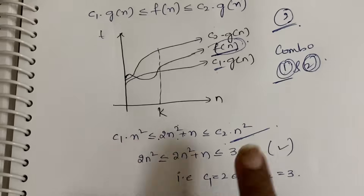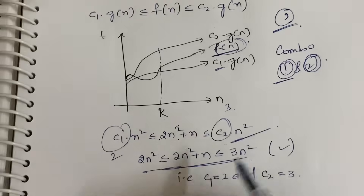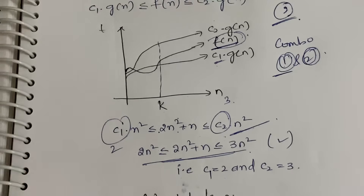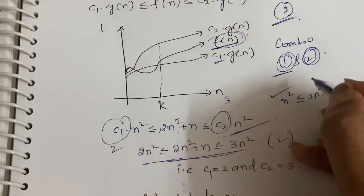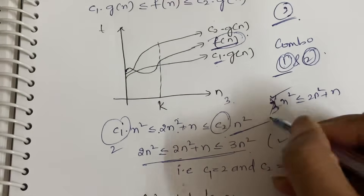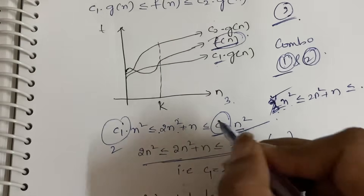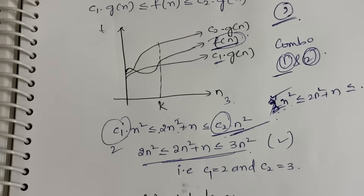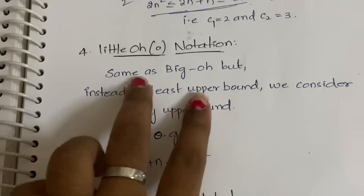Checking values: c1 = 1 satisfies n² ≤ 2n² + n (true), c1 = 2 also satisfies, but c1 = 3 does not. So c1 = 2. For c2, checking 1, 2, 3, 4 — c2 = 3 satisfies 2n² + n ≤ 3n². So c1 = 2 and c2 = 3. That completes Theta notation.